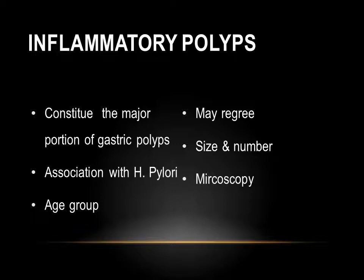Inflammatory polyps have a strong association with H. pylori and develop in the context of chronic gastritis. When H. pylori eradication therapy is started, these polyps can regress. The majority have a small size with diameter usually less than one centimeter. They can be single or multiple in number and usually have a very smooth surface, although ulceration from H. pylori infection can erode the mucosa.